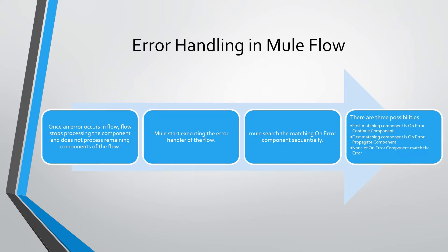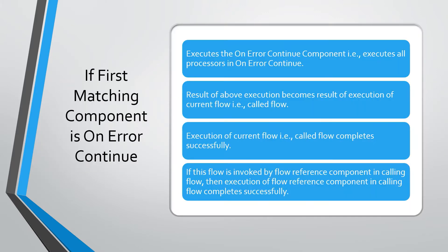Mule acts differently in all three possibilities. If the first matching component is an On Error Continue component, then Mule executes all the processors defined inside that On Error Continue component. The result of this execution becomes the result of the flow, and execution of the current flow completes successfully. If this flow is invoked by a Flow Reference component in a calling flow, then that Flow Reference component also completes successfully.